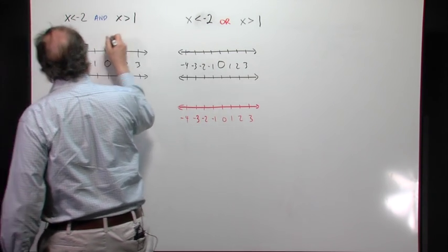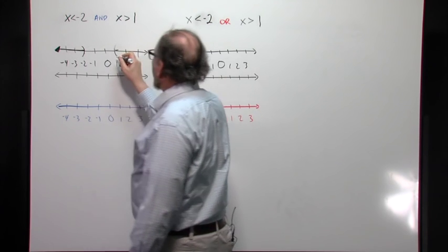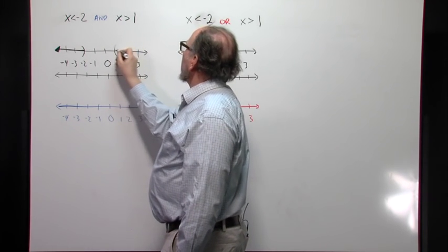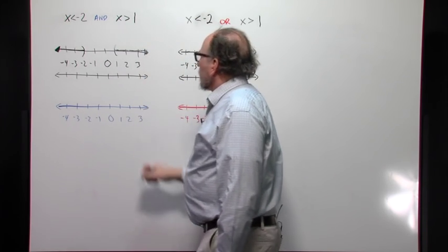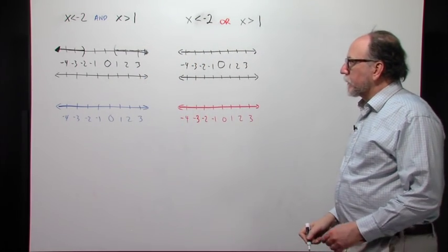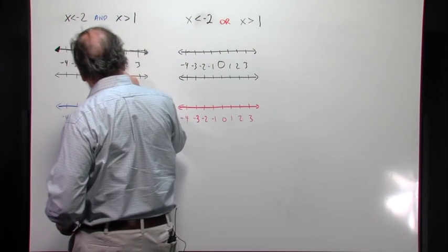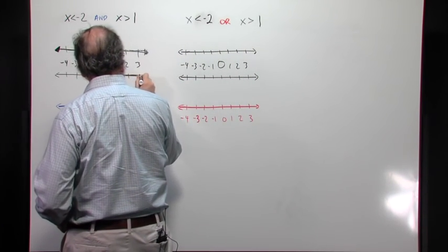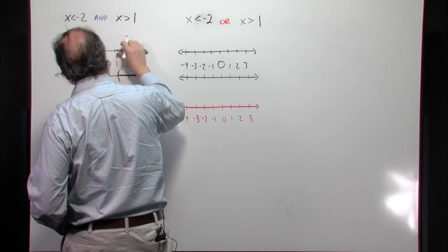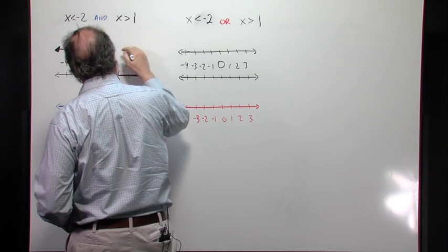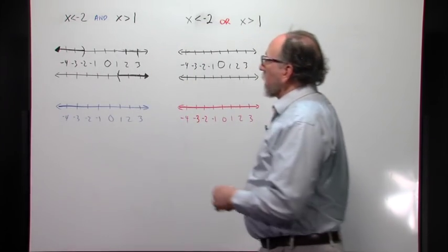And the other side, x is greater than 1 would start at 1 with a parenthesis there and graph that way. Oh, I should have put that on the other number line. It goes down here.